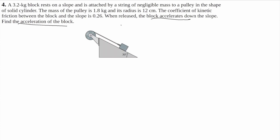I'm going to draw my acceleration arrow. It'll be down this hill, and I'm going to say it'll be positive going down and negative going up. I'm going to say that right will be positive and left will be negative.